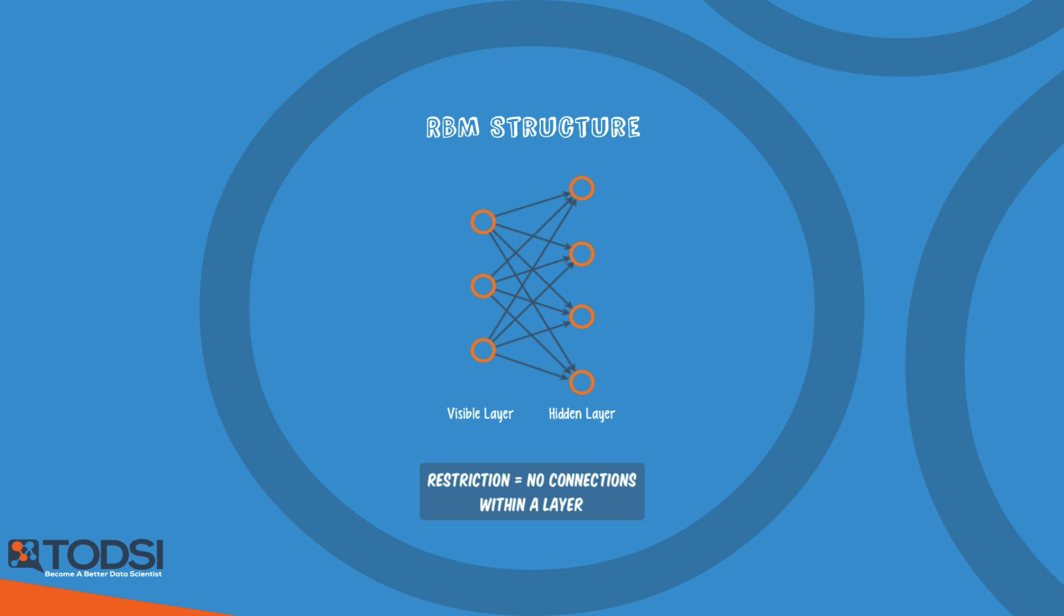An RBM is the mathematical equivalent of a two-way translator. In the forward pass, an RBM takes the inputs and translates them into a set of numbers that encode the inputs. In the backward pass, it takes this set of numbers and translates them back to form the reconstructed inputs. A well-trained net will be able to perform the backwards translation with a high degree of accuracy.